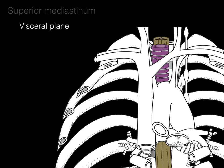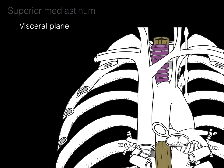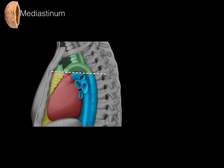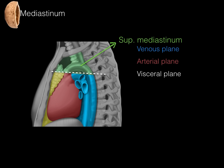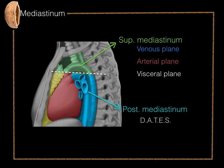The visceral plane contains the trachea — the windpipe — and behind it the esophagus, our food pipe. That is the mediastinum in a nutshell: above the transverse thoracic plane is the superior mediastinum with venous, arterial, and visceral planes; and the posterior mediastinum contains the DATES structures. That's the mediastinum in a nutshell.